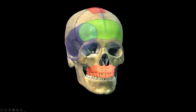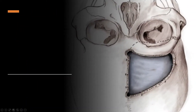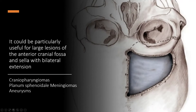Another variation is the superorbital approach, which I'll discuss a bit later — it has basically the same surgical trajectory but with a little less bone resection. Most of the time you only need minimal bone resection, because the goal is to avoid retracting the frontal lobe too much. However, in some cases you have to, particularly when the tumor is large. This approach is especially useful for large lesions of the anterior skull base and sella with bilateral extensions, such as craniopharyngiomas, planum sphenoidale meningiomas, or aneurysms.